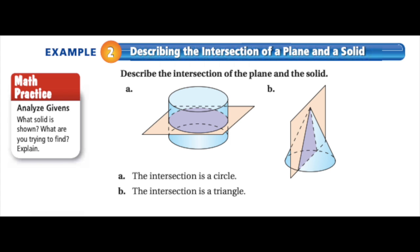So with this example, we are looking at first a cylinder, 2a is a cylinder. And so when they do that intersection, again, it's a circle.